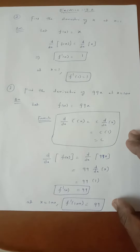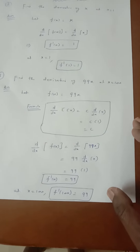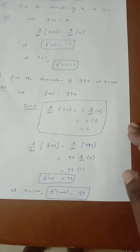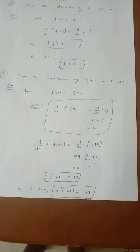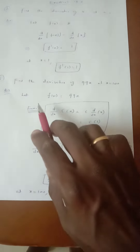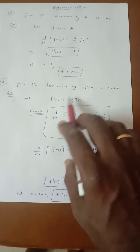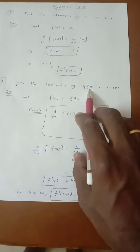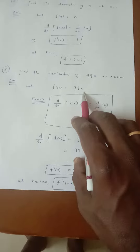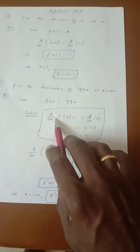Next, Sum number 3: find the derivative of 99x at the point x equal to 100. Solution: let us consider the given function f of x equal to 99x. First we have to remember the formula.